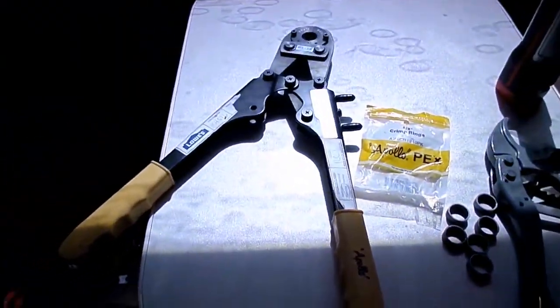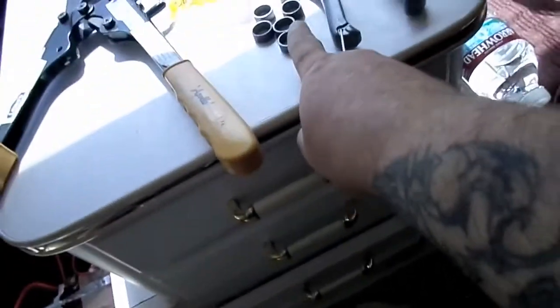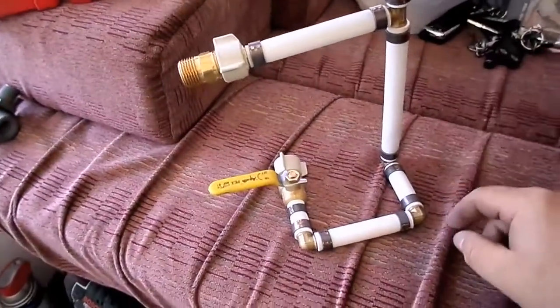And this is the tool that you use to crimp the PEX rings around the pipe here. So anyways, this is just a few pieces of PEX, some fittings.